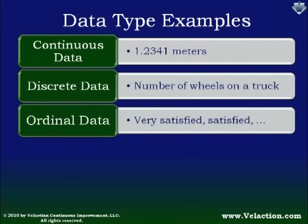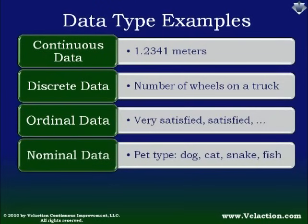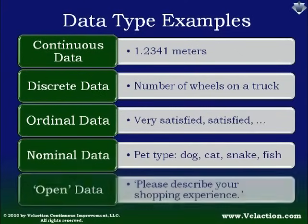Ordinal — a lot of Likert scales, or when you have the five little bubbles you fill in, will be set up as ordinal: very satisfied, satisfied, average, unsatisfied, things like that. Nominal data, as I said, would be pets — it's a group and you can pick from that group, but it's a very finite amount of possible answers you have.